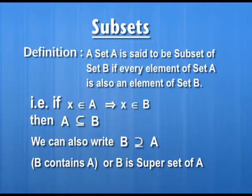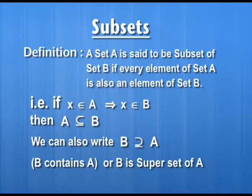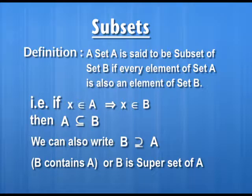The definition of subset can be given as: a set A is said to be a subset of set B if every element of set A is also an element of set B. Symbolically, x belongs to A implies x belongs to B, then we say A is contained in B, or A is a subset of B. This information can also be written as B contains A — B is a superset of A and A is a subset of B.